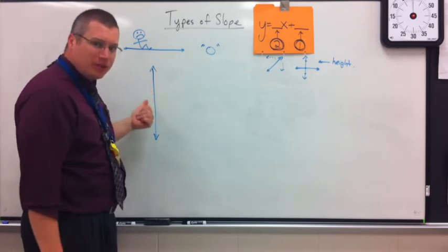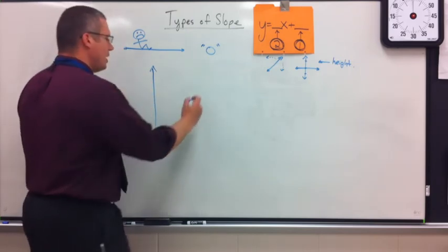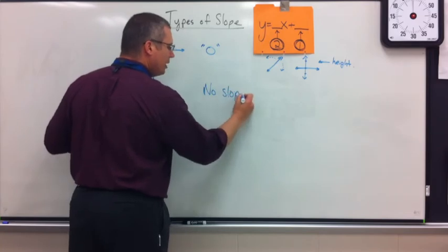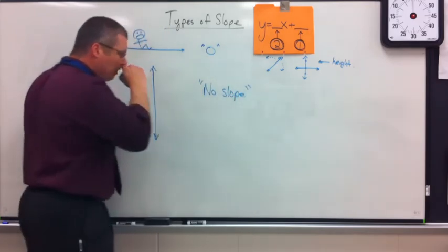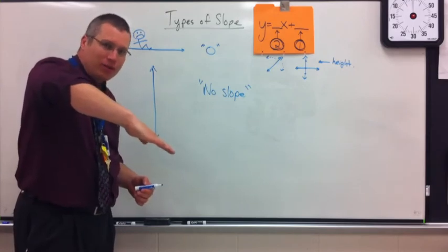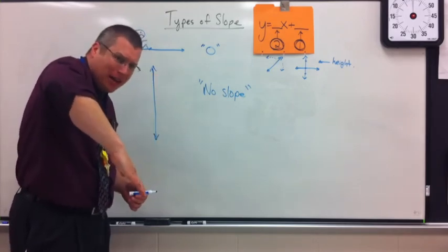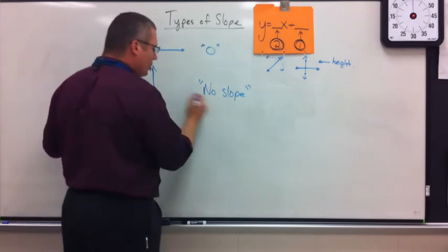If you say, what kind of tilt does this have? The answer is, there is none. So this answer is no slope. Remember, slope has to have some kind of angle to it. Whether it's a flat angle or a really steep angle, it still has some angle. This is called no slope.